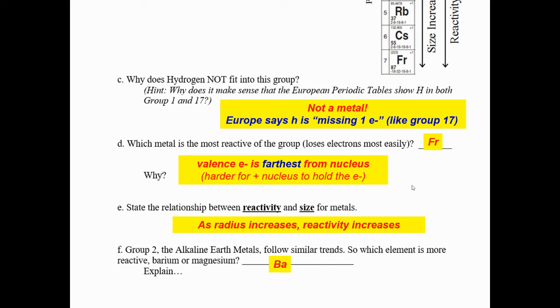If we look down group 2, you can decide between barium and magnesium. Oh, barium has 6 shells of electrons versus magnesium that only has 3. So barium is bigger. Barium is going to have an easier time losing its valence electron. That means barium is going to be more reactive.